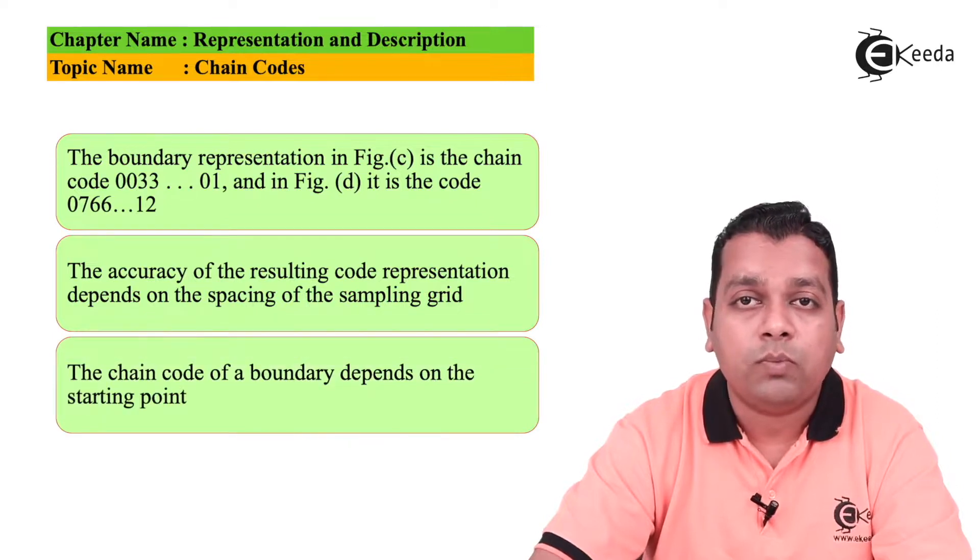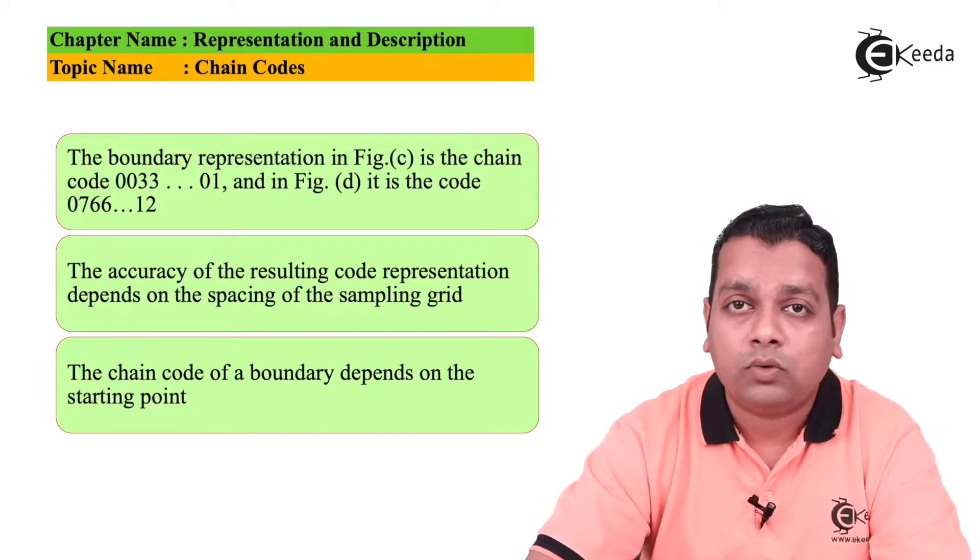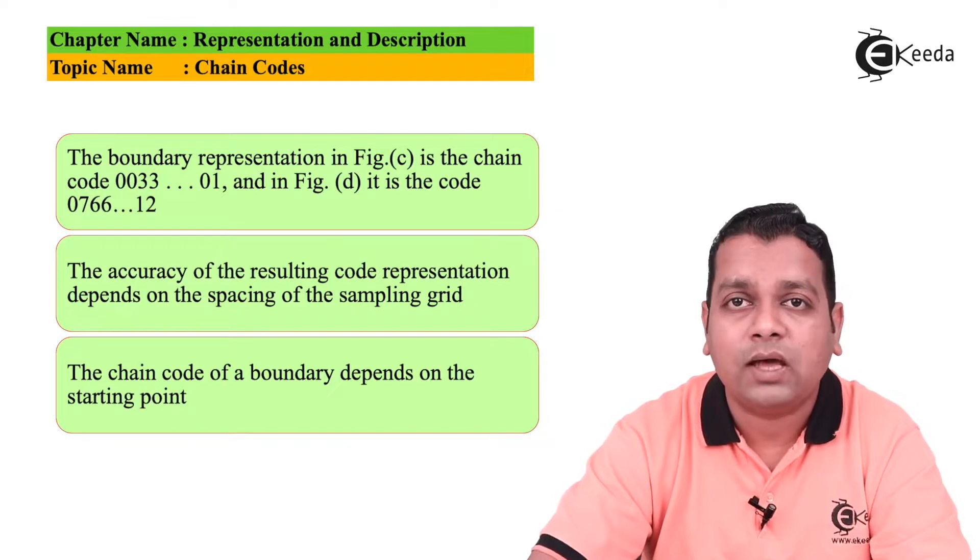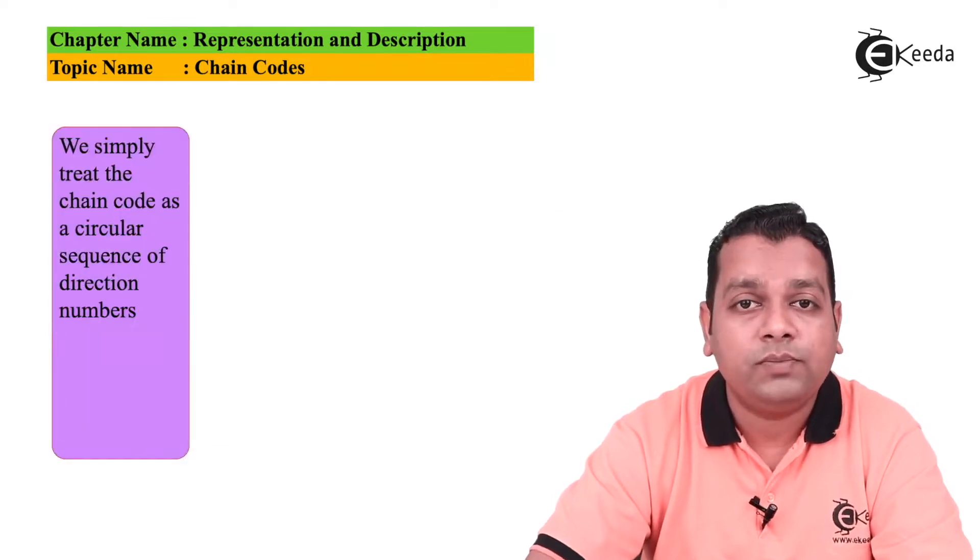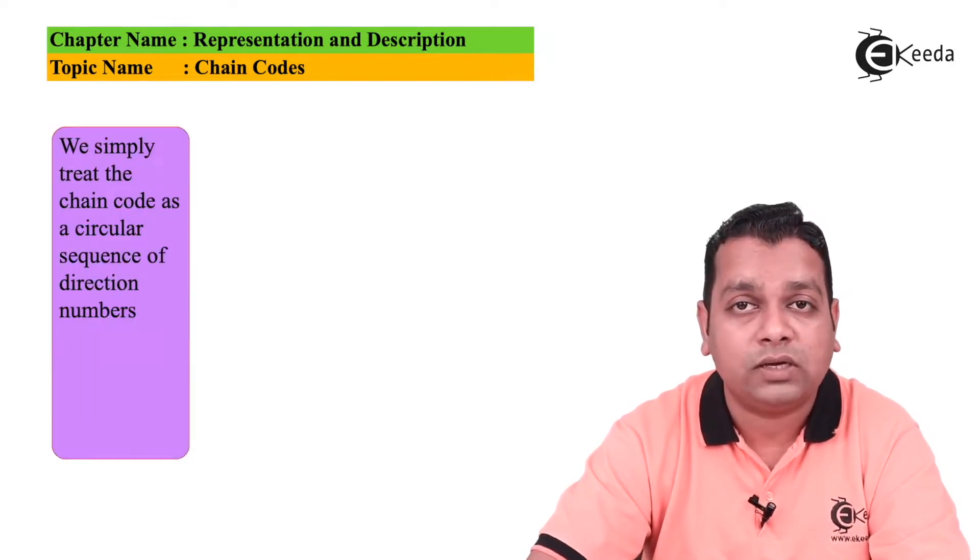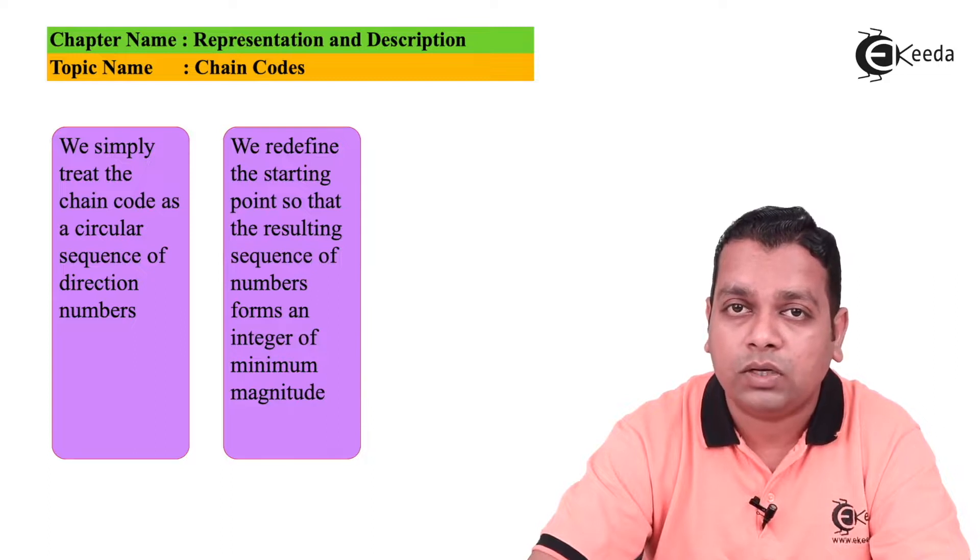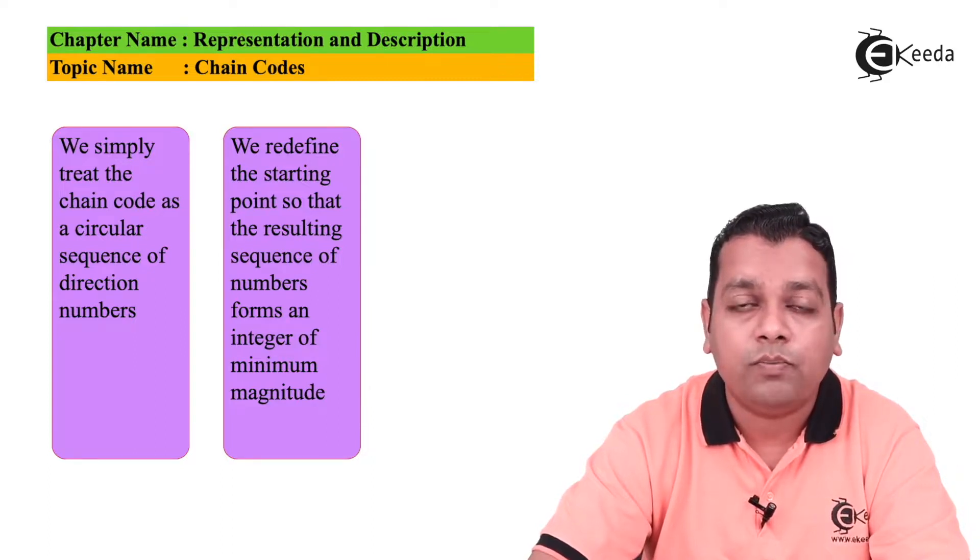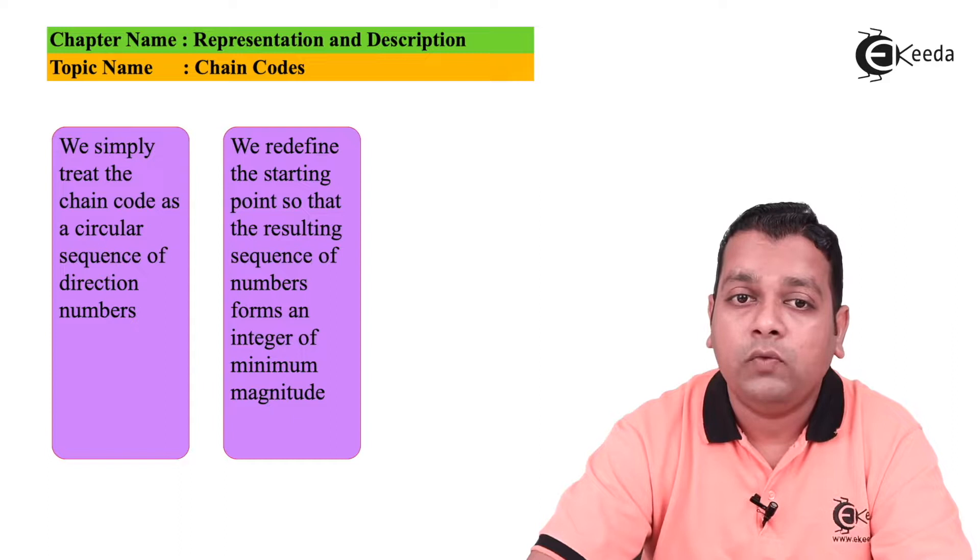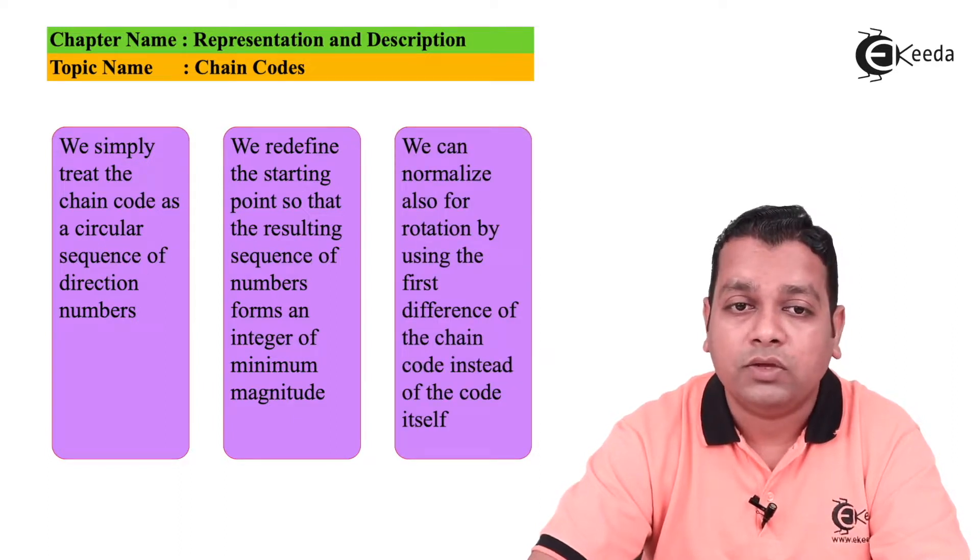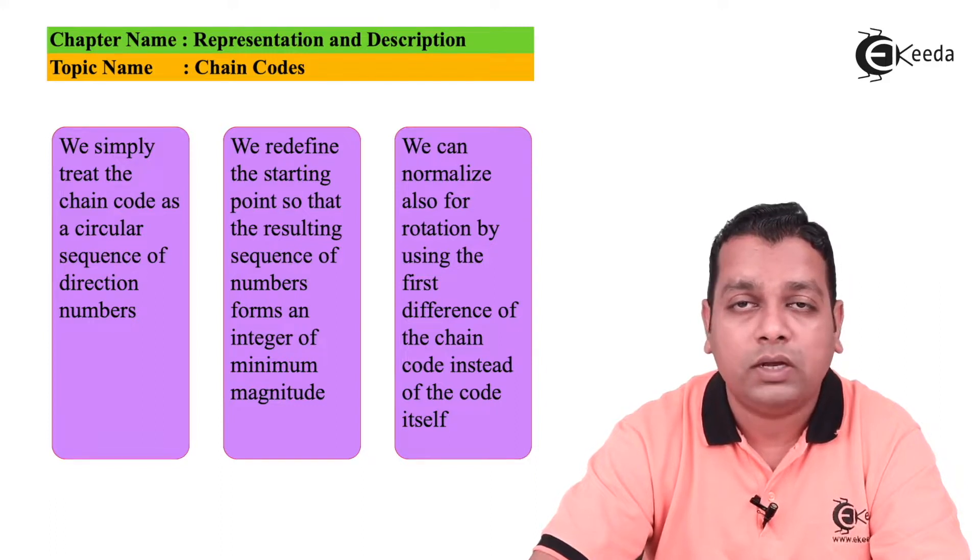The chain code of the boundary depends on the starting point. We had selected the starting point at the top left corner in arbitrary manner. Here we simply treat the chain code as a circular sequence of directional numbers. We redefine the starting point so that the resulting sequence of numbers forms an integer of minimum magnitude. We can also normalize for the rotation by using the first difference in the chain code instead of the code itself.